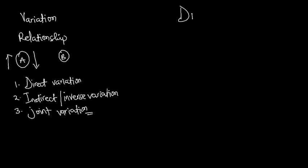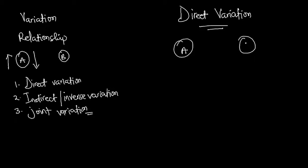Let's look at what direct variation is and how we can represent it mathematically. Two or more quantities are said to vary directly when both quantities increase or decrease together. If quantity A and quantity B vary directly, an increase in A causes an increase in B, and likewise a decrease in A causes a decrease in B. This type of relationship is what we refer to as direct variation.